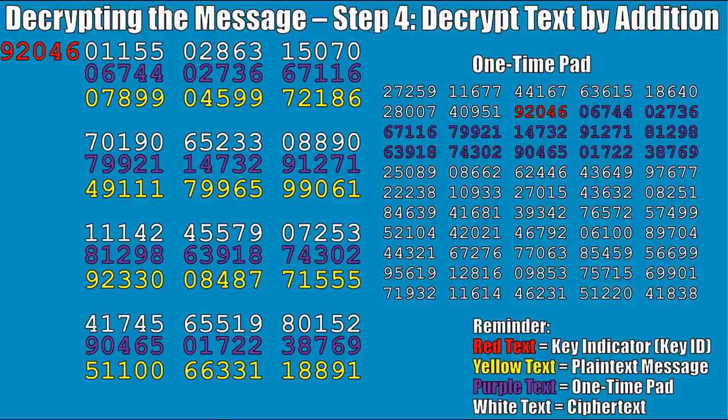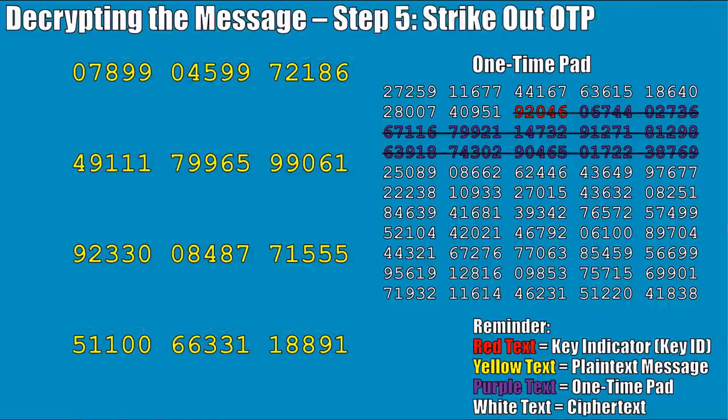The next step is quite simple — we just start adding them together. 0 plus 0 becomes 0, 6 plus 1 becomes 7, 7 plus 1 becomes 8, 5 plus 4 equals 9, 5 plus 4 equals 9, and so on. If a number becomes greater than ten, we simply leave the first digit off and use just the last digit. So 5 plus 7 equals 12, but we drop the 1, so we get 2. And there we go — we now have our decrypted text in yellow.